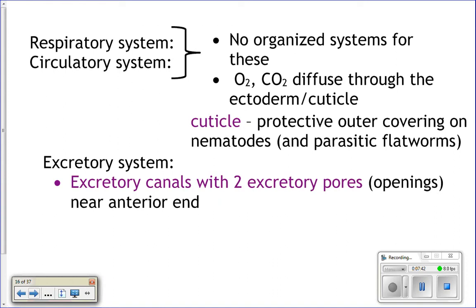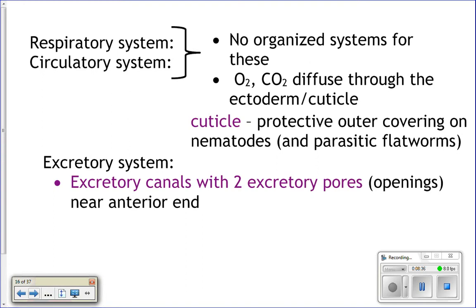They can get big but are still thin enough that cells can rely on diffusion. Many worms, especially parasitic ones, have a cuticle — a hard, tough protein outer covering that helps them survive in harsh environments. Some parasitic roundworms can even survive in straight vinegar because of this cuticle. They must molt the cuticle in order to grow, then grow a new one.